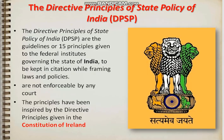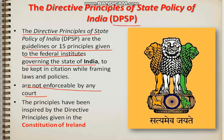Next comes the Directive Principles of State Policy — DPSP. DPSP stands for Directive Principles of State Policy — these are guidelines or principles given to the federal institutions governing the state of India. These instructions are given by the Constitution to the government to run the government properly, smoothly, and in a better way. Importantly, they are not enforceable in court — if a directive principle is not followed, you cannot go to court against it. These principles were inspired by the directive principles in the Constitution of Ireland.